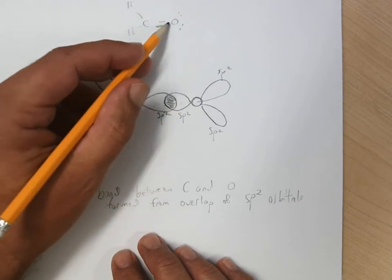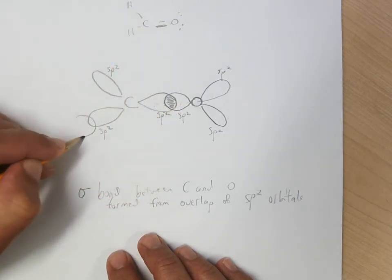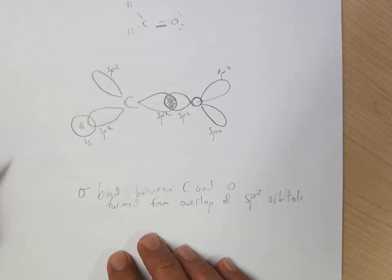which are going to be involved in constructing the molecule. So the carbon bonds to the oxygen. The carbon also bonds to the two hydrogens.